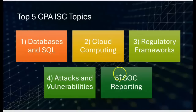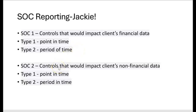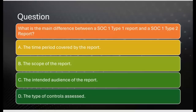Now for a question on SOC reporting. For a quick review: SOC 1 deals with controls impacting the client's financial data — Type 1 covers a point in time, Type 2 covers a period of time. SOC 2 deals with controls impacting non-financial data, also with Type 1 for a point in time and Type 2 for a period of time. Question: What is the main difference between a SOC 1 Type 1 report and a SOC 1 Type 2 report?